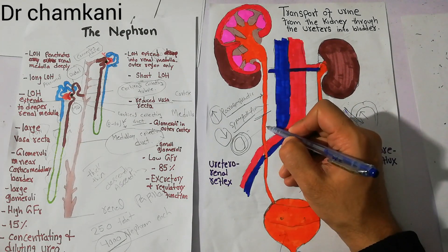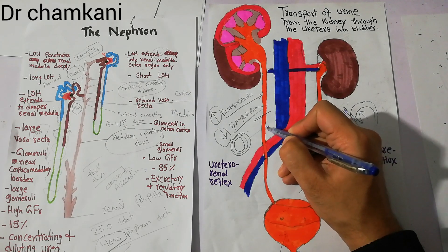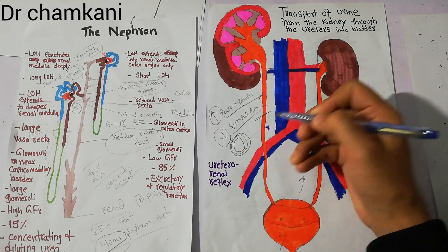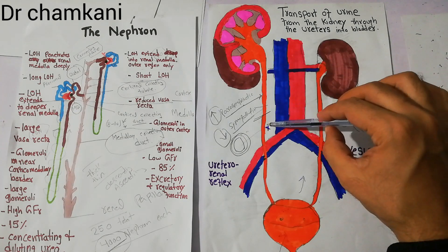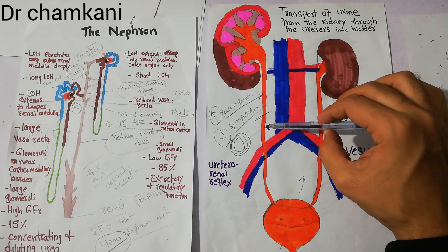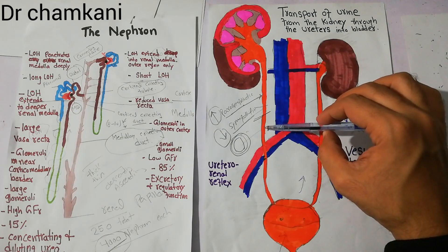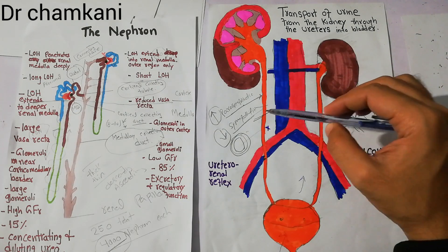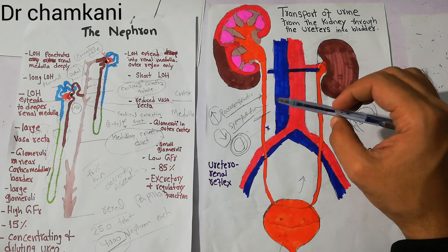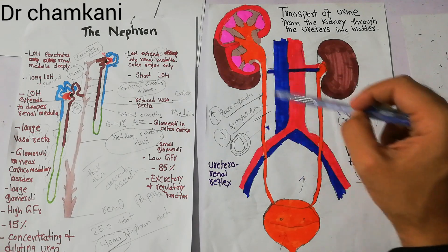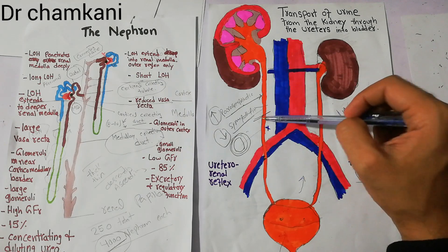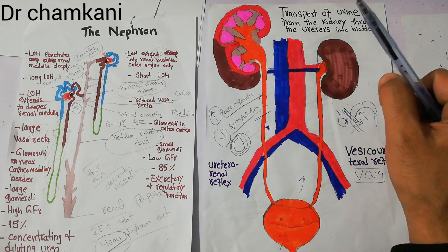Here is a ureter, and it has been blocked due to a ureteral stone. This blockage mostly occurs due to renal stones which fall into the ureter and get stuck.